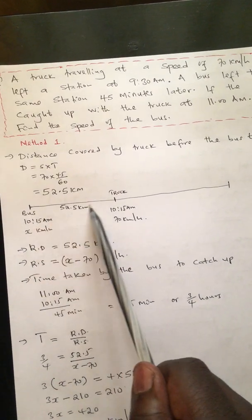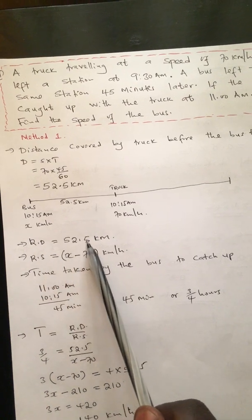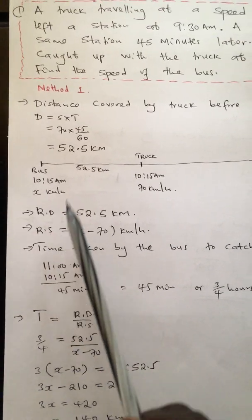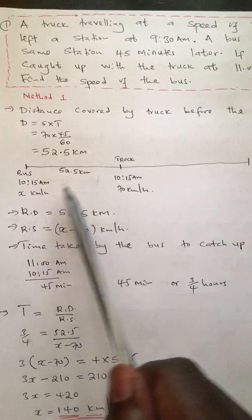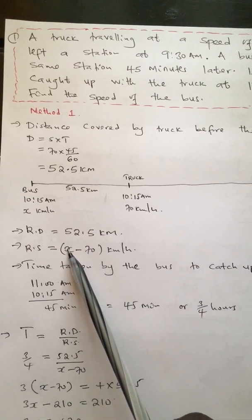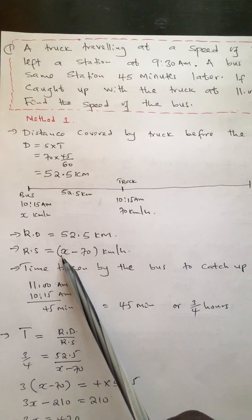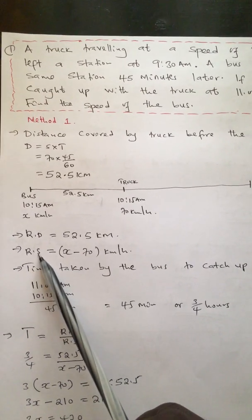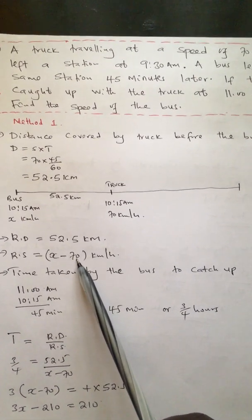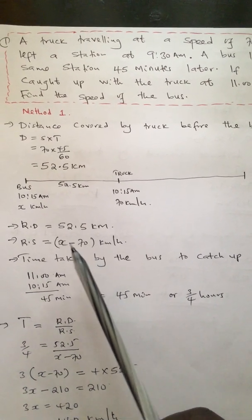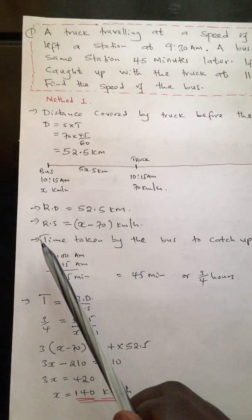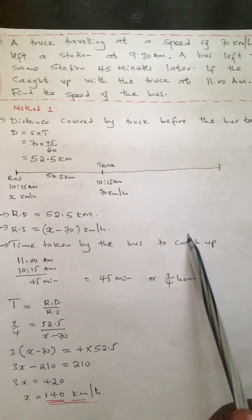So 52.5 km is the relative distance. The relative speed for two bodies moving in the same direction is found by subtracting the speeds. Since we don't know the speed of the bus, we call it x. So the relative speed is x minus 70, the speed of the truck. We now have the relative distance and the relative speed.